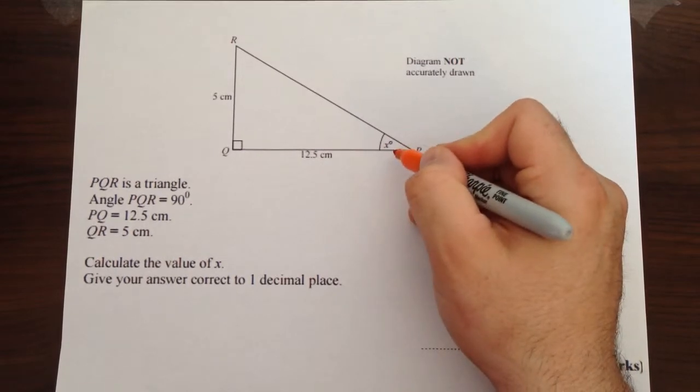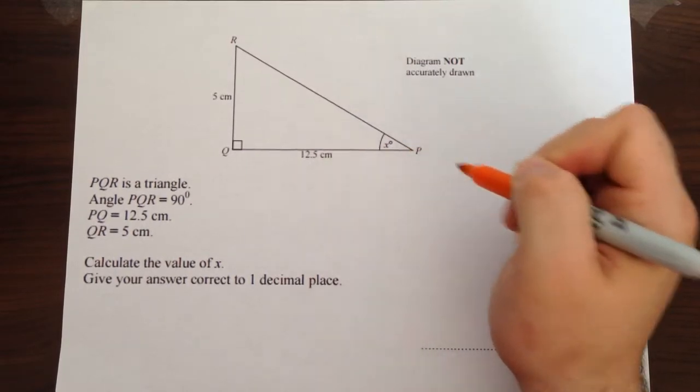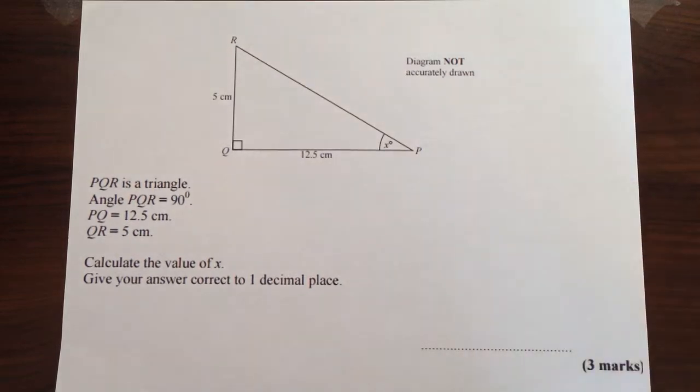Now, immediately we're trying to find an angle, which means it can't be Pythagoras. Pythagoras only works for trying to find sides, which means it must be trigonometry.